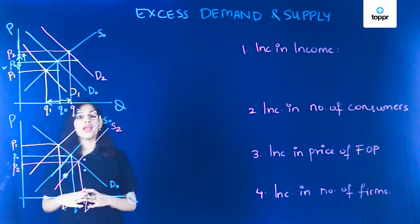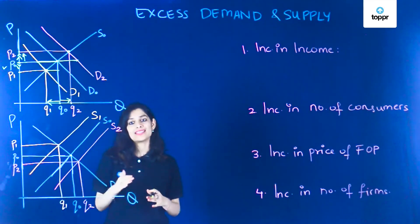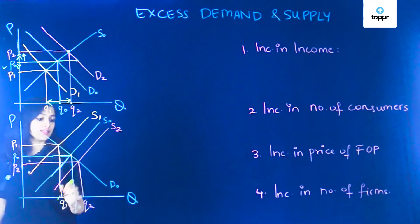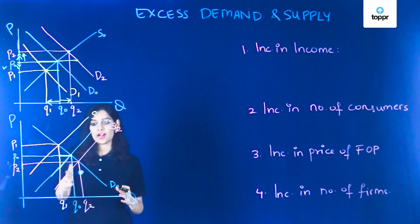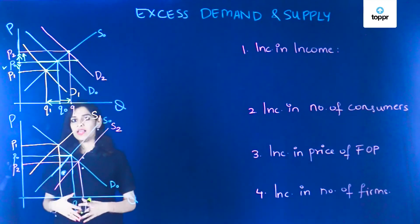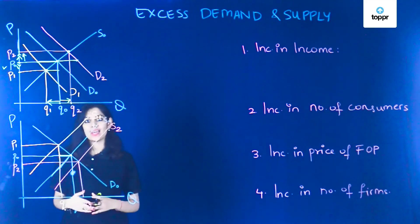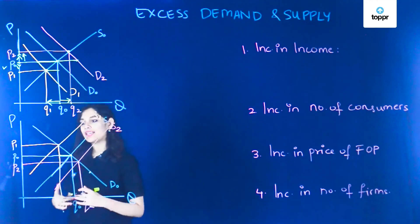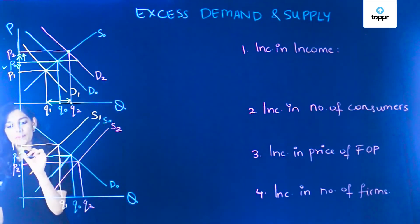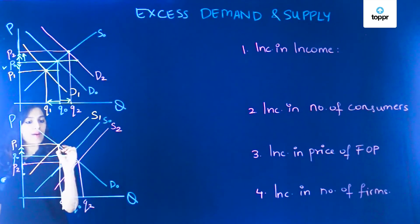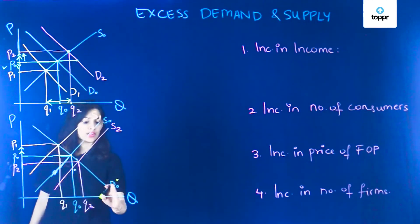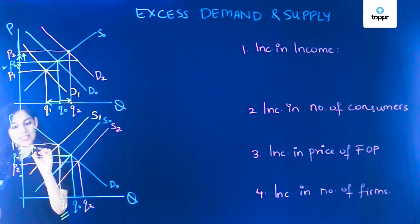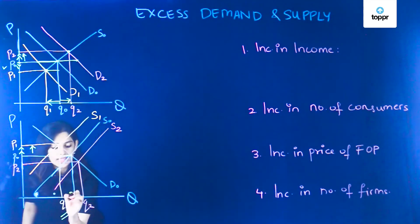Now let's take a look at when supply decreases, which means for every price there is less supply than before. In this situation there is excess demand, and when there is excess demand, some consumers are left unsatisfied and may be willing to purchase the product at a higher price. Hence the price increases from P0 to P1 until the new supply curve intersects with the original demand curve, giving quantity Q1. Here the price increases from the equilibrium but the quantity decreases.